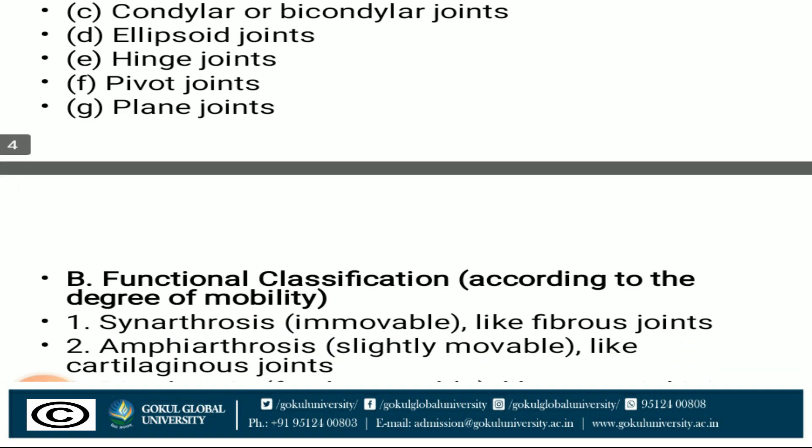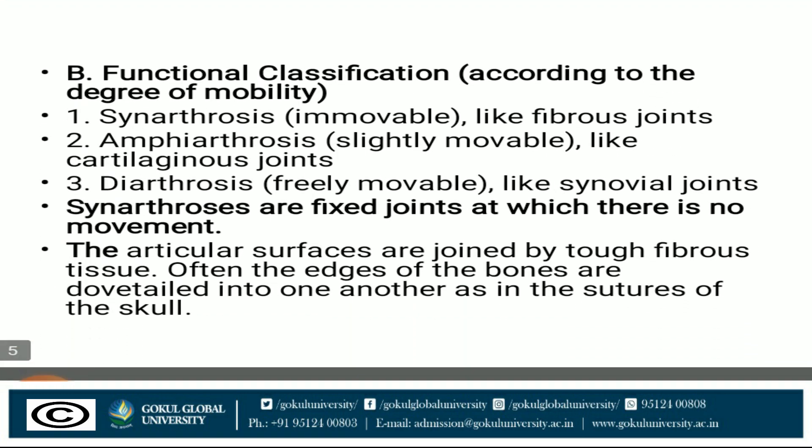Now we will discuss functional classification. Synarthrosis refers to immovable joints, like fibrous joints. Amphiarthrosis refers to slightly movable joints, like cartilaginous joints. Diarthrosis refers to freely movable joints, like synovial joints.